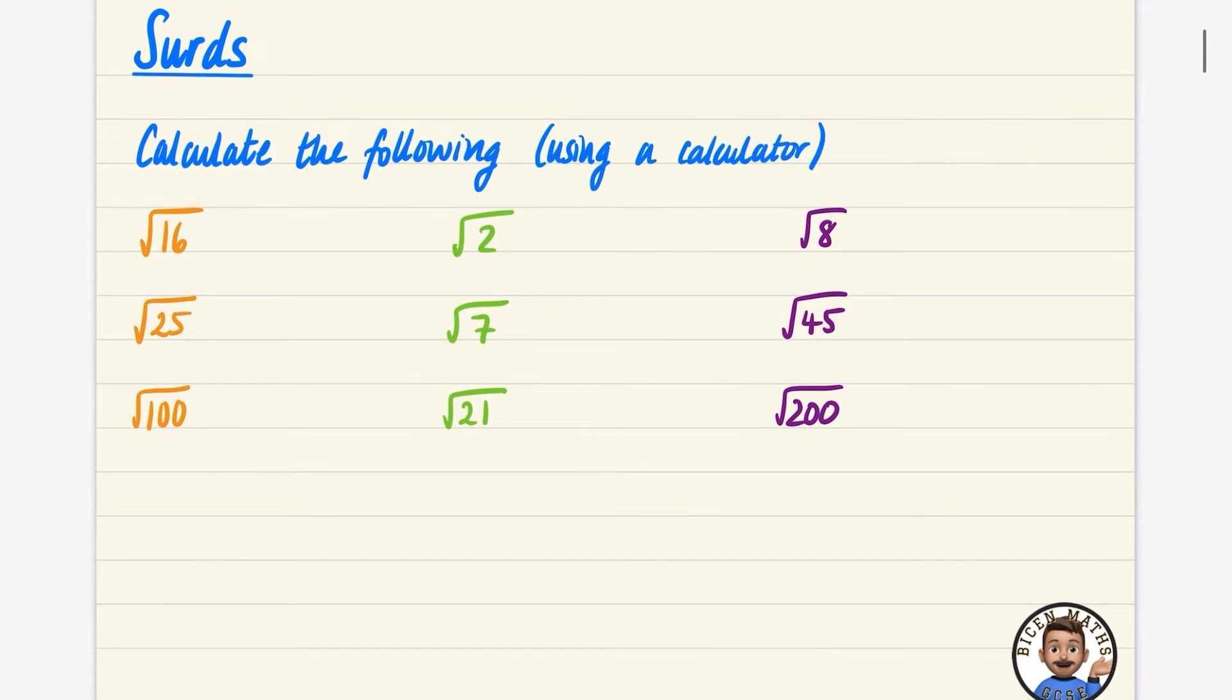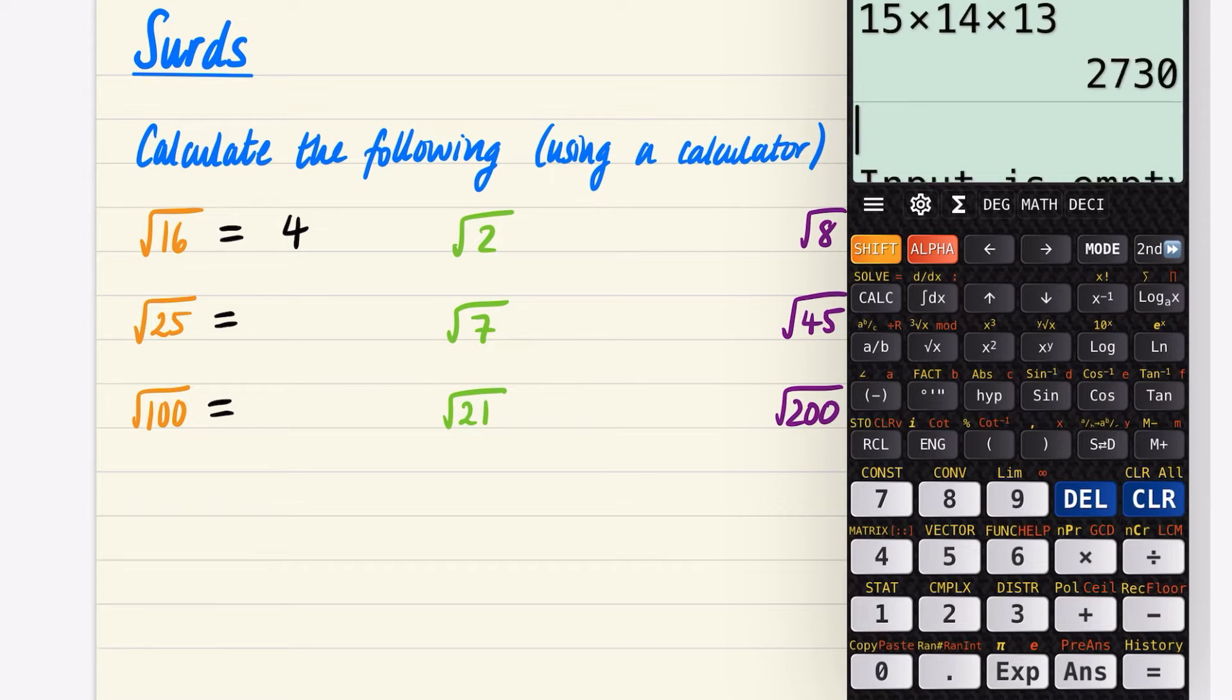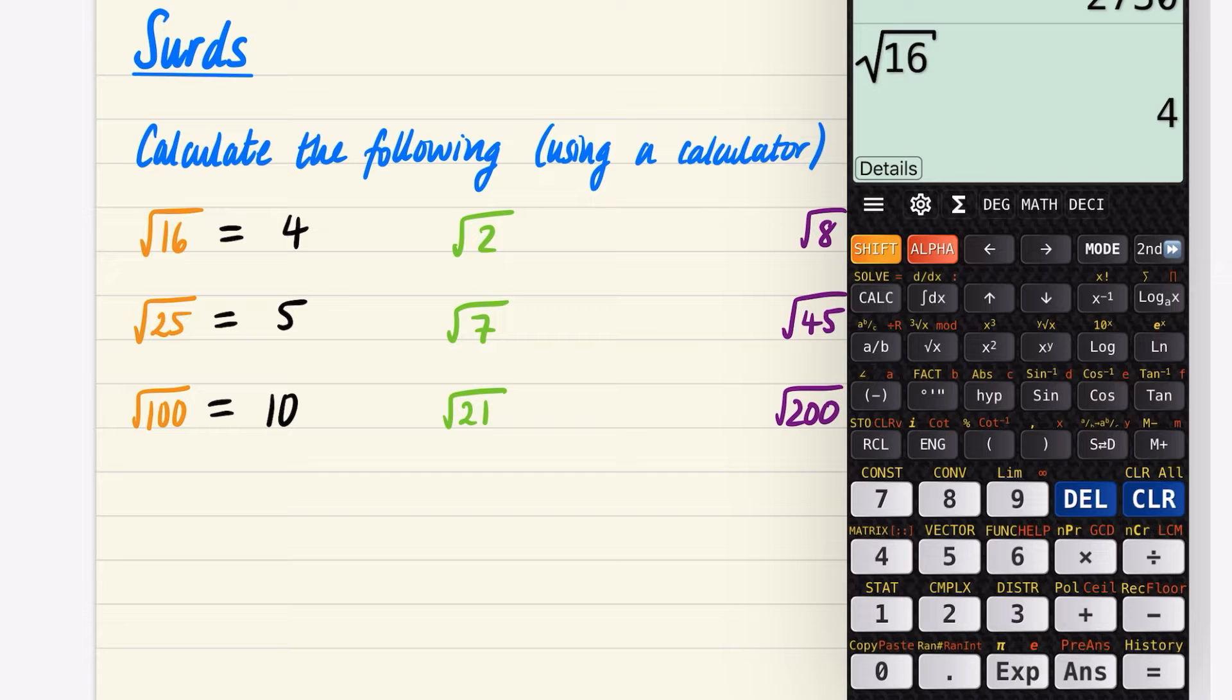So what I want you to do is to calculate the following, and you can use a calculator to do this. I'm going to show you what you might like to follow alongside. Now these first three that I've got in orange here, you're probably not going to need to use a calculator, but if you do the square root of 16 on a calculator, you'll get 4 because 4 times 4 is 16. If you do the square root of 25, you'll get 5, and if you do the square root of 100, you get 10. That's all because 4 squared is 16, 5 squared is 25, and 10 squared is 100.